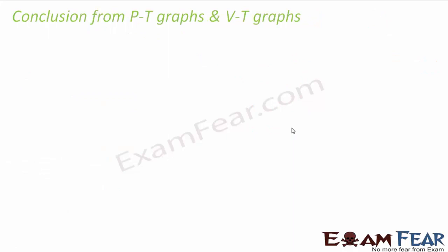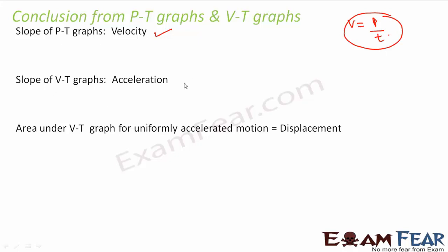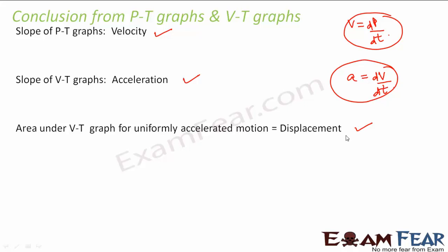To summarize the conclusions from position-time and velocity-time graphs: the slope of a position-time graph gives velocity, because velocity is change of position with time. The slope of a velocity-time graph gives acceleration, because acceleration is change of velocity with time. The area under the velocity-time graph for uniformly accelerated motion gives displacement.